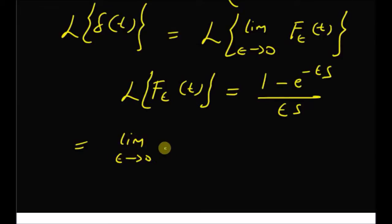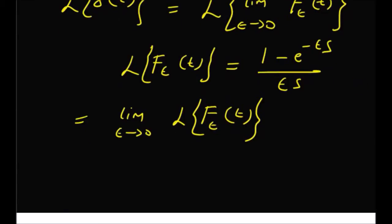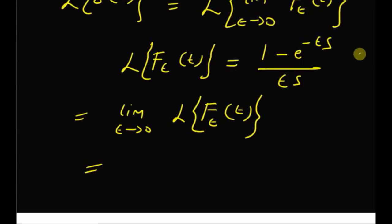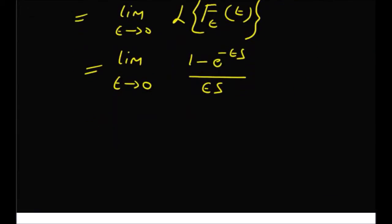Using this result, we can derive the Laplace transform of the delta function as the limit as epsilon tends to 0 of the Laplace transform of f_epsilon of t. Since epsilon is independent of s and t, we can take this limit outside the Laplace transform. So we have: limit as epsilon tends to 0 of (1 minus e to the power minus epsilon s) divided by (epsilon times s).